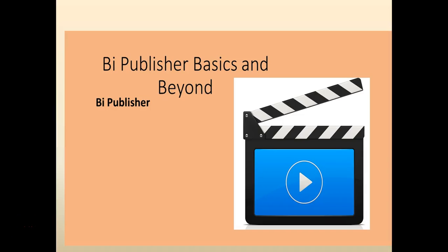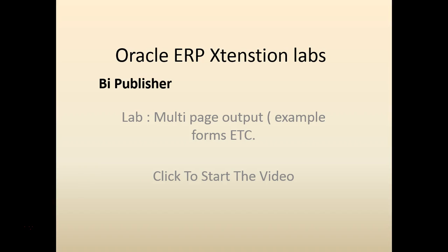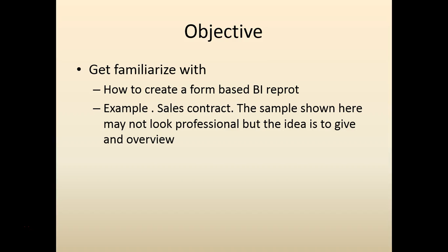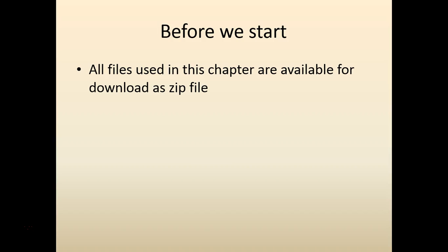Hello and welcome to BA Publisher Basics and Beyond. In this chapter we will look at how to create a multi-page output. A simple example would be how to create a pre-fill form from BA Publisher. We are going to look at a sales contract and how a sales contract can be created. It may not look professional but the idea is the same and you can build on it. The zip file is available below the video for download.